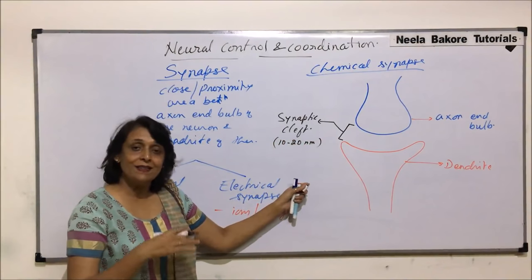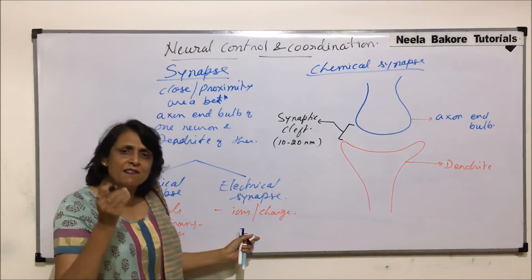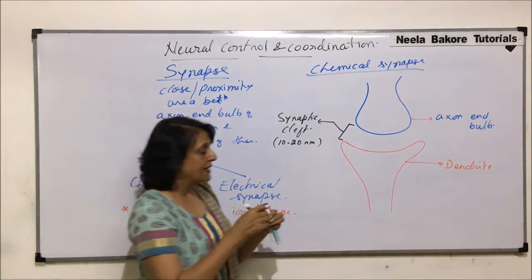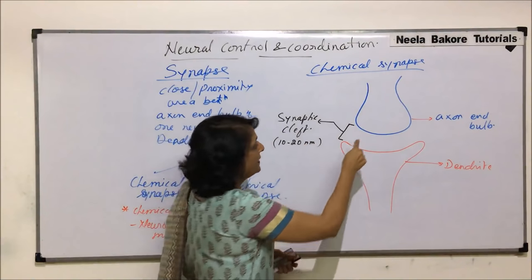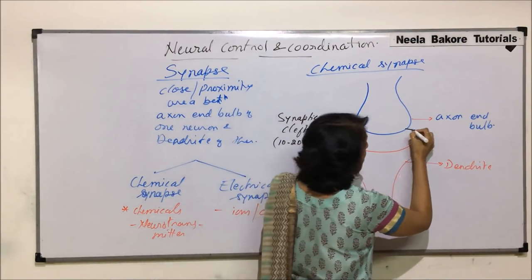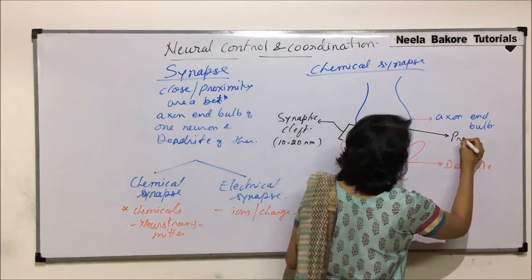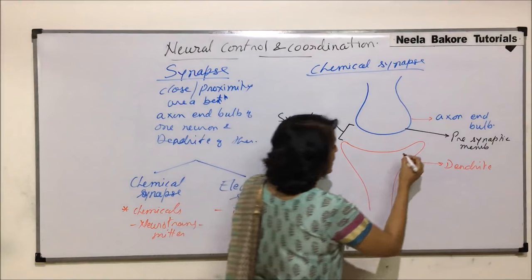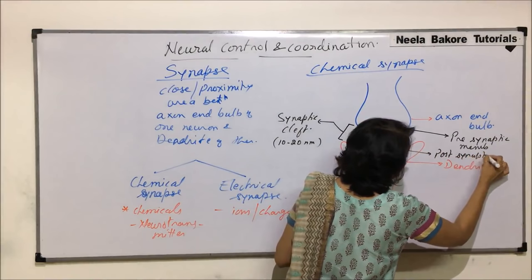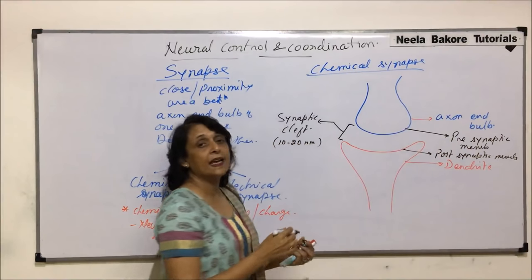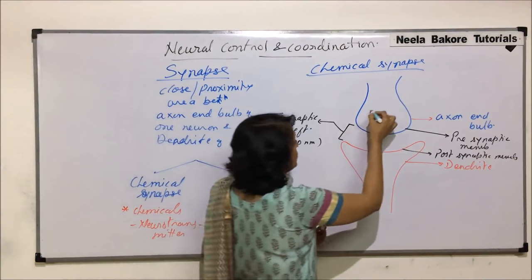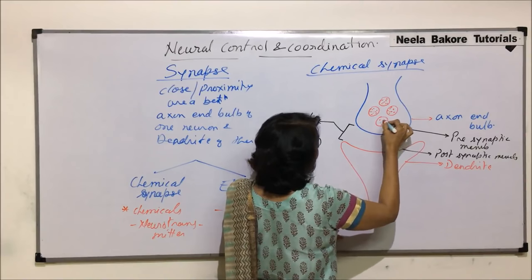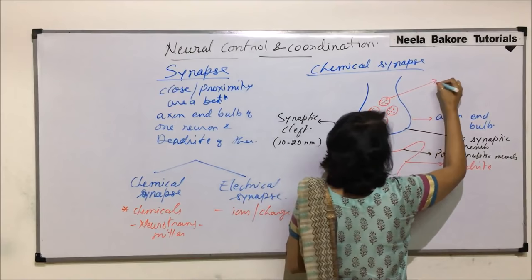In the case of chemical synapse, the synaptic cleft is 10 to 20 nanometers. In the case of electrical synapse, this space is very very less — it is 0.2 nanometers. The membrane before this gap, that is the membrane of the axon end bulb, is known as the pre-synaptic membrane, and the membrane of the dendrite is called the post-synaptic membrane.